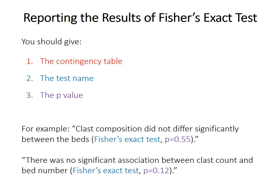When reporting the results of Fisher's exact test, you should provide the contingency table itself, the name of the test, and the p-value. There are a few ways to phrase the result: you can say the counts were significantly different or not significantly different, as you would for other tests. You could say class composition didn't differ significantly, or that the counts of observations were different. You could also use the association phrasing, but it's probably cleaner to just say the counts did or did not differ significantly.